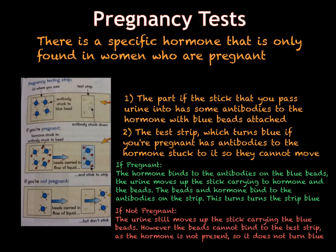This concludes this video in the Edexcel B3 revision tutorial series. Today we have looked over vaccination, the immune system, and monoclonal antibodies. In the next video tutorial, B3.6, we will be looking at the plant science aspects of B3, including plant defences, periodicity and circadian rhythms, and plant communication and co-evolution.